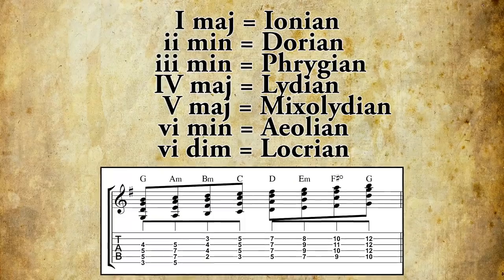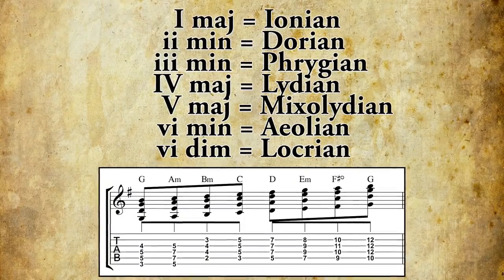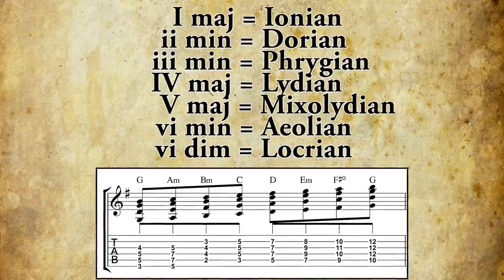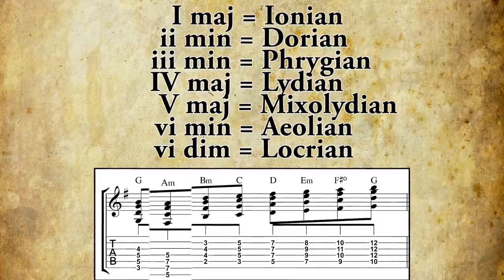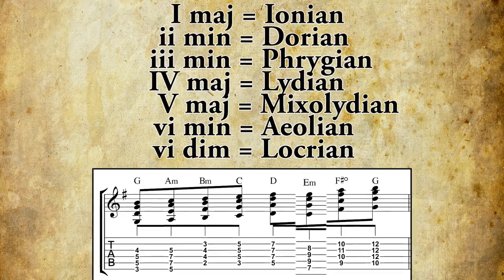G Ionian shows the same notes as A Dorian. So why play one or the other? Well, technically they sound the same, and if you were to play the scales just up and down you wouldn't hear a different note. But who plays scales just up and down? It's all about what notes you want to emphasize and what chords you're playing over. When you look at the harmonized major scale, each chord has its own mode: the major first is Ionian, the minor second is Dorian, the minor third is Phrygian and so on. Understanding the relation between scale degrees and modes is essential and very important for soloing over chord changes.